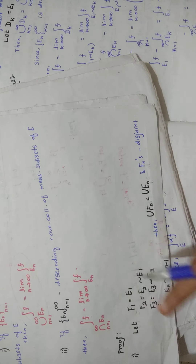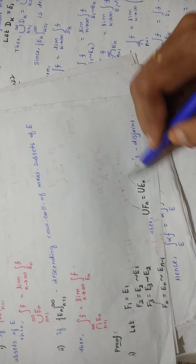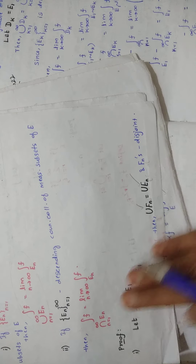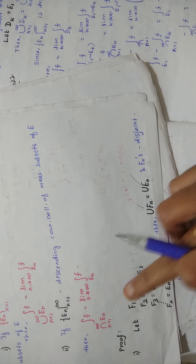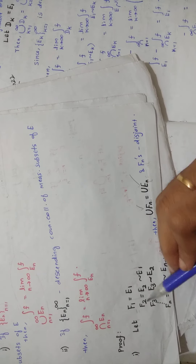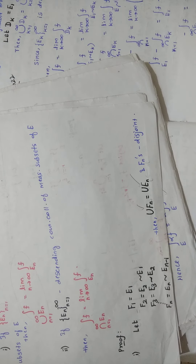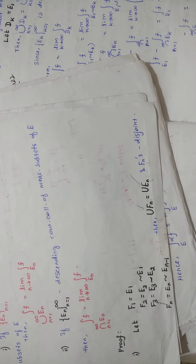Then you take the union of F1, F2, F3 till Fn, and you find it equals the union of E1, E2, E3, etc. Both are equal when you define like this. Also, the Fn's will be disjoint — there will be no common values among them. For F2, you subtract E1 from E2; for F3, you subtract E2 from E3. After doing all these things, F1, F2, F3 till Fn have no common values, so they are disjoint.